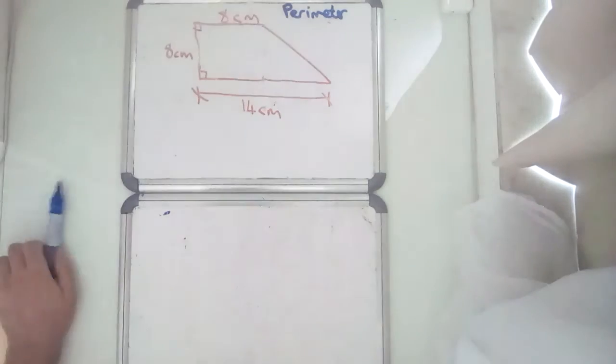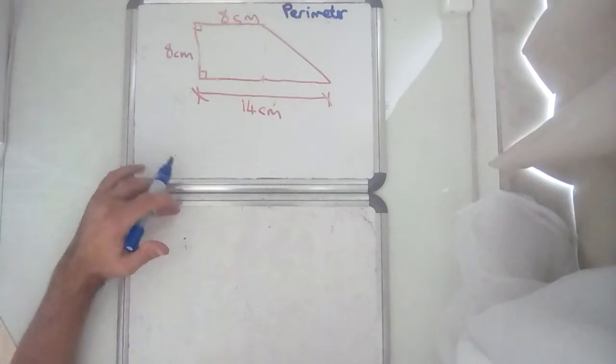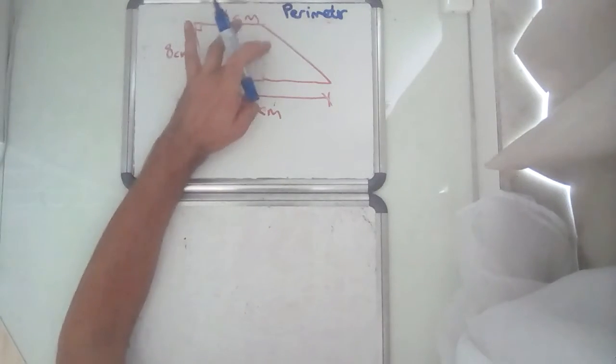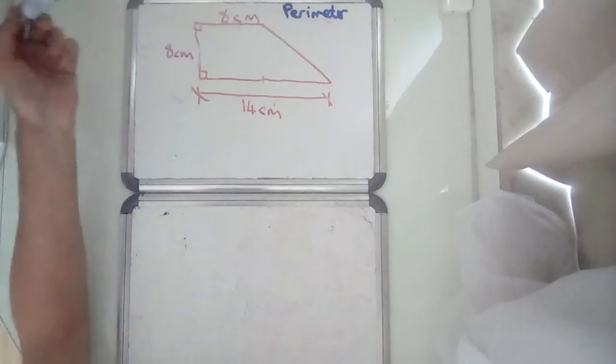Okay, third example, which kind of brings together both the ideas from the first two. You've got a trapezium here, so you've been asked to find the perimeter again.